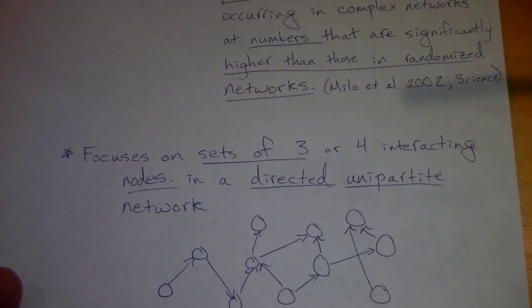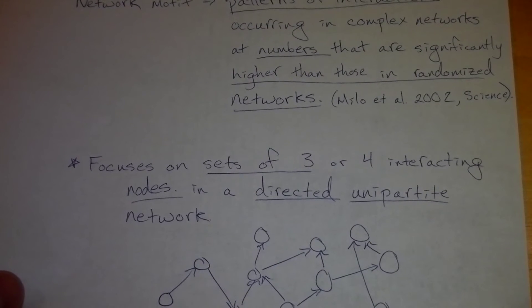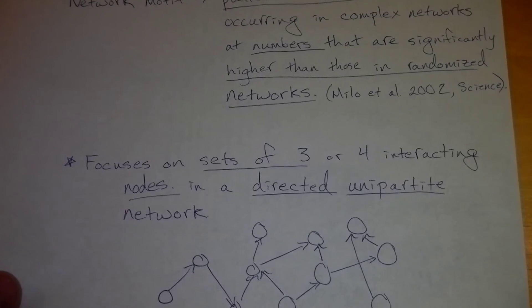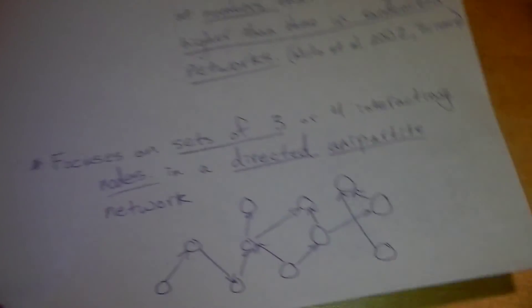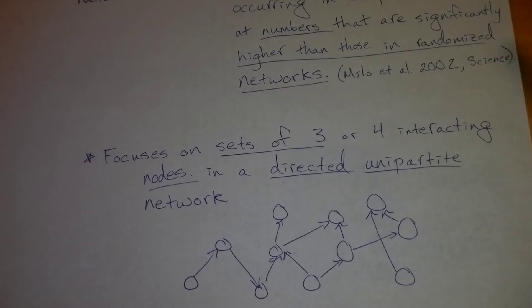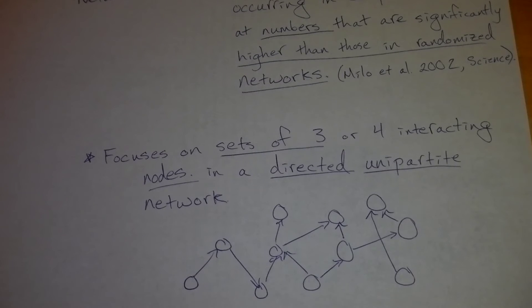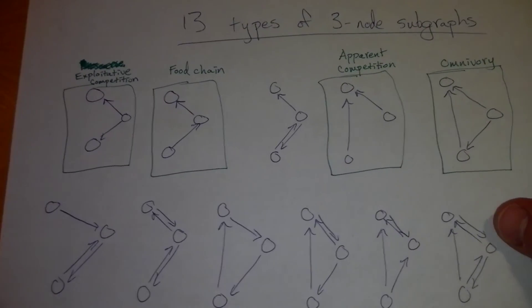Now, the reason why researchers focus on sets of three, sometimes four, and usually never five or more species is because there's 13 types of three-node interactions in a directed unipartite network. With four species, there's 199. And it just gets more crazy from there. So if we take a look at just some of the three-node subgraphs.